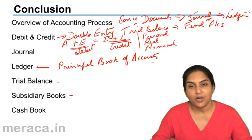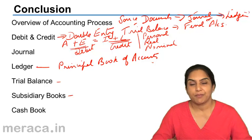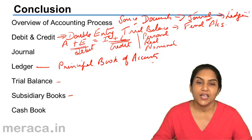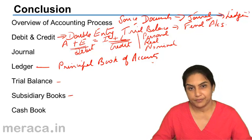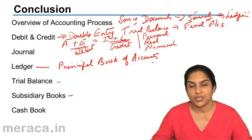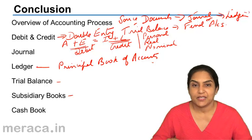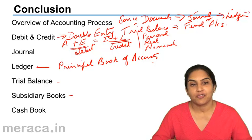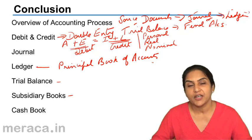If the transactions cannot be entered in the cash book, purchase day book, sales day book, purchase return book or sales return book, then they are entered in what is called the journal proper. For transactions like depreciation, charging depreciation, salaries due at the end of the period, unexpired expenses, accrued income, credit sale of fixed assets, etc., all recorded in the journal proper.